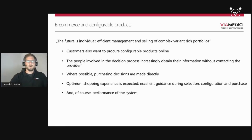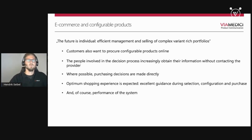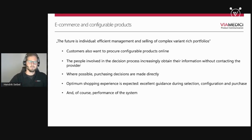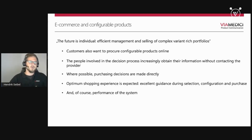Customers also want to procure configurable products online. For example, I want to buy an office chair — without a headrest but with armrests, where the armrest color could be red, blue, or black, and the seat cushion material should be black leather — but if leather is not allowed, I need a rule set for all these variants. Today it's not enough to have just 10 or 20 pre-configured chairs available.